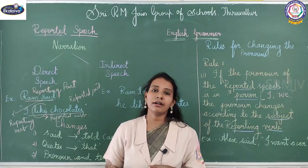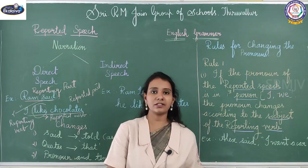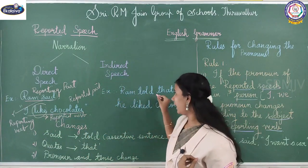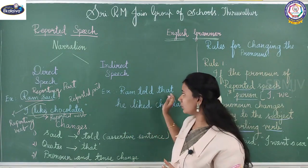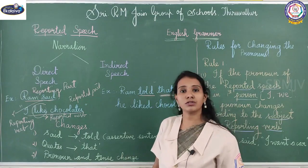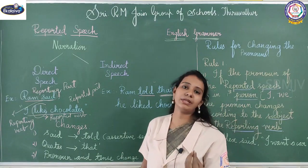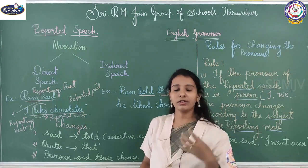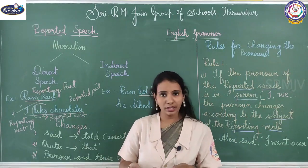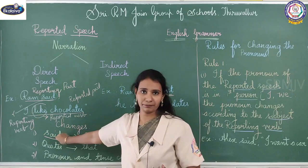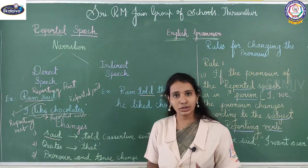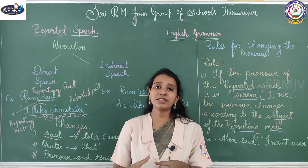Now let us see what changes occur when we have to convert direct speech into indirect speech. You could see 'said' is replaced by 'told', the double quotes are replaced by 'that', and there is also a change in the tense as well as the pronoun of the sentence. The reporting verb has been changed to 'told', and this conversion depends upon the type of sentence we are dealing with.